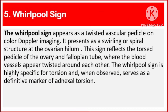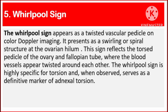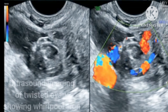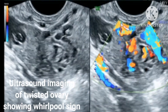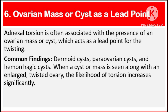Number 5: Whirlpool sign. The whirlpool sign appears as a twisted vascular pedicle on color Doppler imaging. It presents as a swirling or spiral structure at the ovarian hilum. This sign reflects the torsed pedicle of the ovary and fallopian tube, where blood vessels appear twisted around each other. The whirlpool sign is highly specific for torsion and when observed serves as a definitive marker of adnexal torsion.